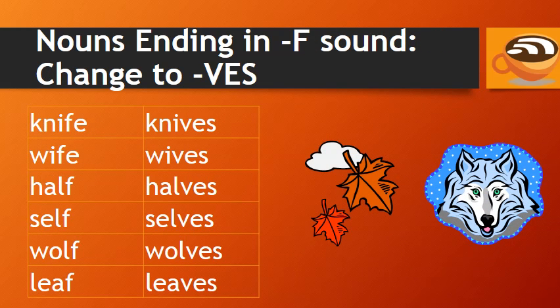For nouns ending in the F sound, we change it to VES in the plural. For example: knife, knives; wife, wives; half, halves; self, selves; wolf, wolves; and leaf, leaves.